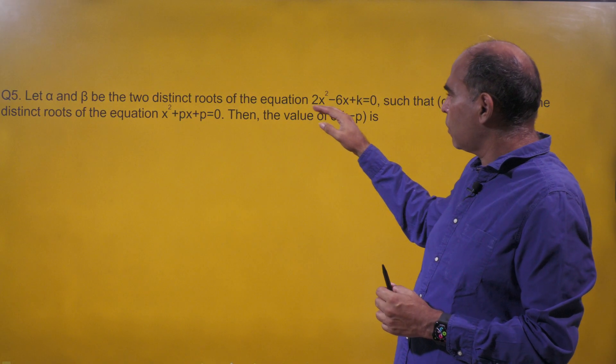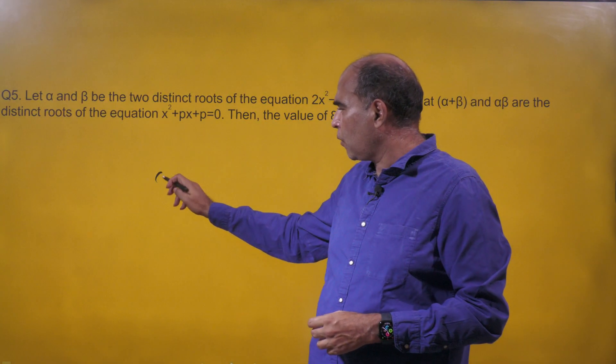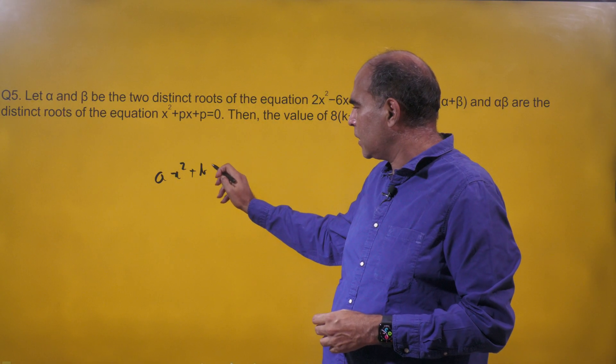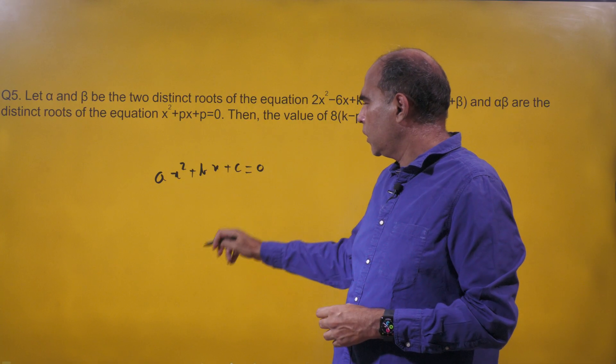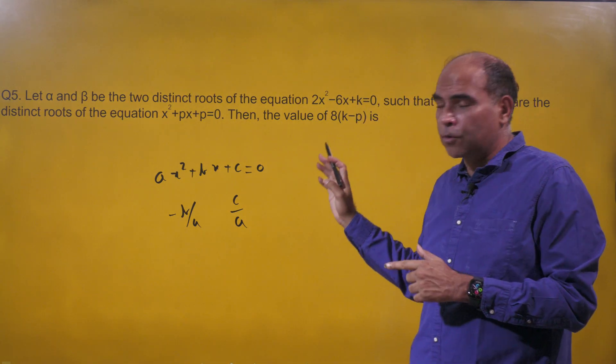Let α and β be the two distinct roots of the equation 2x² - 6x + k = 0. We know that for a quadratic equation ax² + bx + c = 0, the sum of roots is -b/a and the product of roots is c/a. That's the only concept to be used in this question.